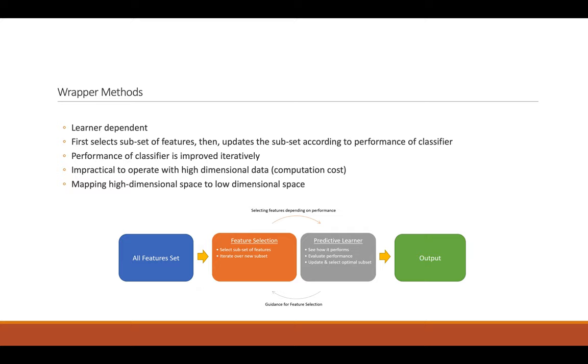There are two main methods. First of them is Wrapper Methods. First select a subset of features, then update the subset according to performance of classifier. Performance of classifier is improved iteratively. Wrapper Methods can be used on unlabeled data as well.